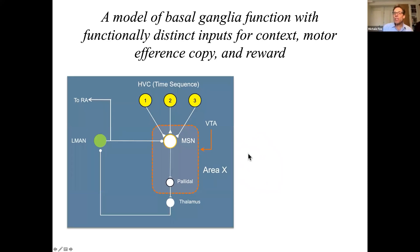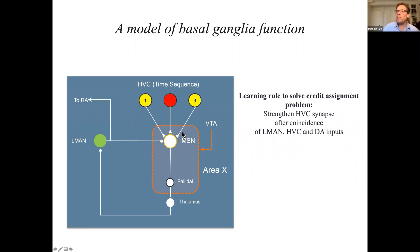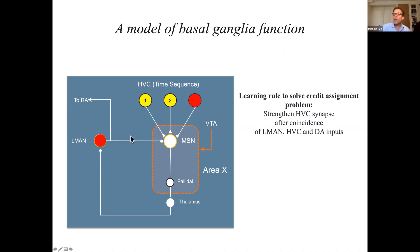We've also proposed a specific circuit implementation of this process in area X. The idea is that HVC inputs converge with L-MAN inputs onto medium spiny neurons where they implement a particular learning rule: coincident activation of L-MAN input, HVC input, and reward inputs lead to a strengthening of HVC synapses. For example, as the bird sings, HVC inputs are sparsely active at each time. If at one time point L-MAN is active and that leads to a better song outcome, then we'll have coincident activation of L-MAN, HVC input, and reward, leading to a strengthening of a particular subset of HVC synapses.